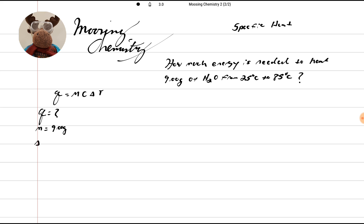Our delta T, we're going to have to figure that out because we have two temperatures, and the specific heat for water is 4.18 joules per grams times Celsius.